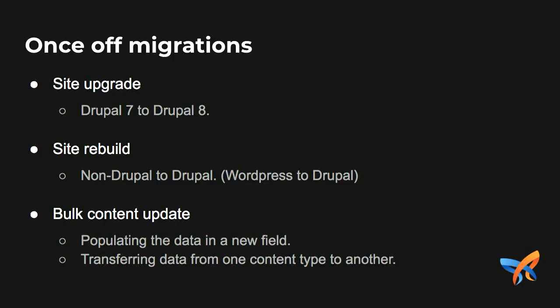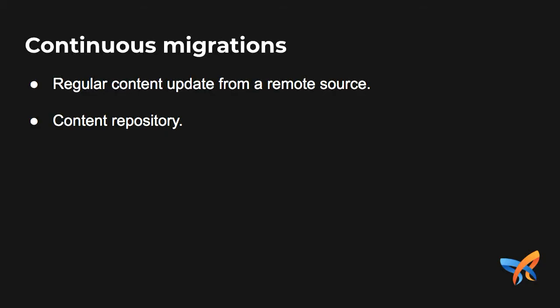So what can we do with migrations? There are many types of migrations. Maybe you are doing a site upgrade from Drupal 7 to 8, or rebuilding a site from a non-Drupal to a Drupal site where you need to migrate the contents across. Or maybe you are doing some bulk update on the content — populating data in a new field or transferring data from one content type to another. There's also continuous migrations for regular updates, like getting weather information or stock prices. You can also do a centralized content repository where you fetch data into different satellite sites.